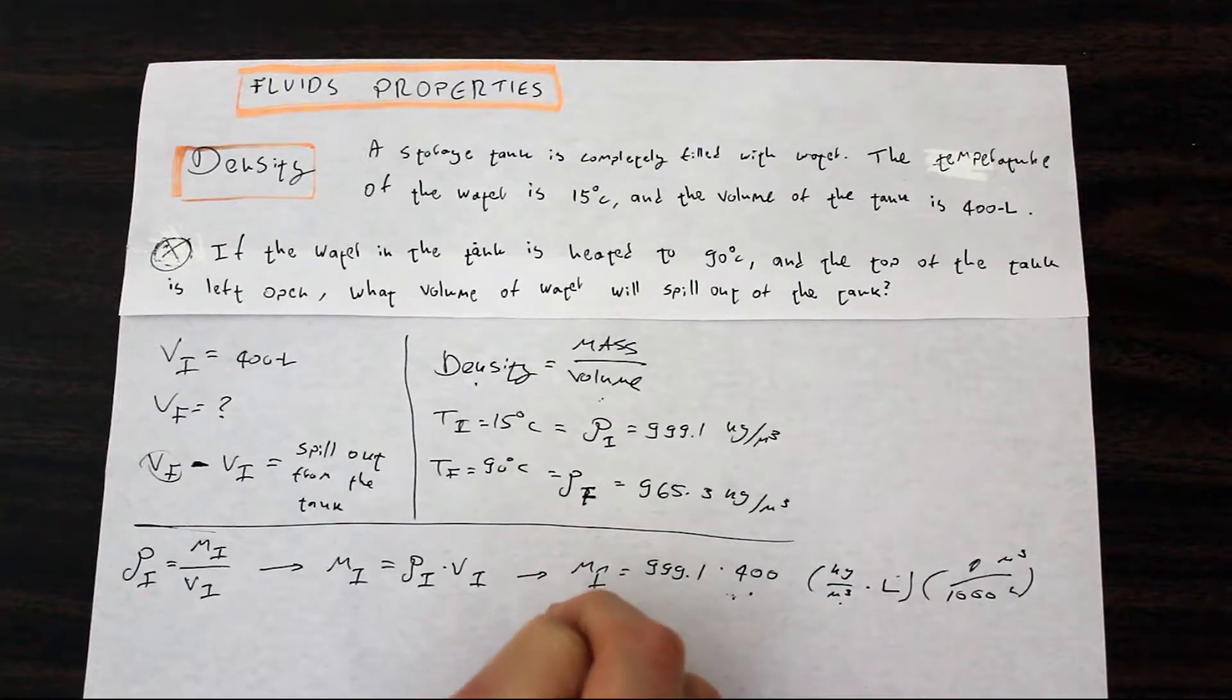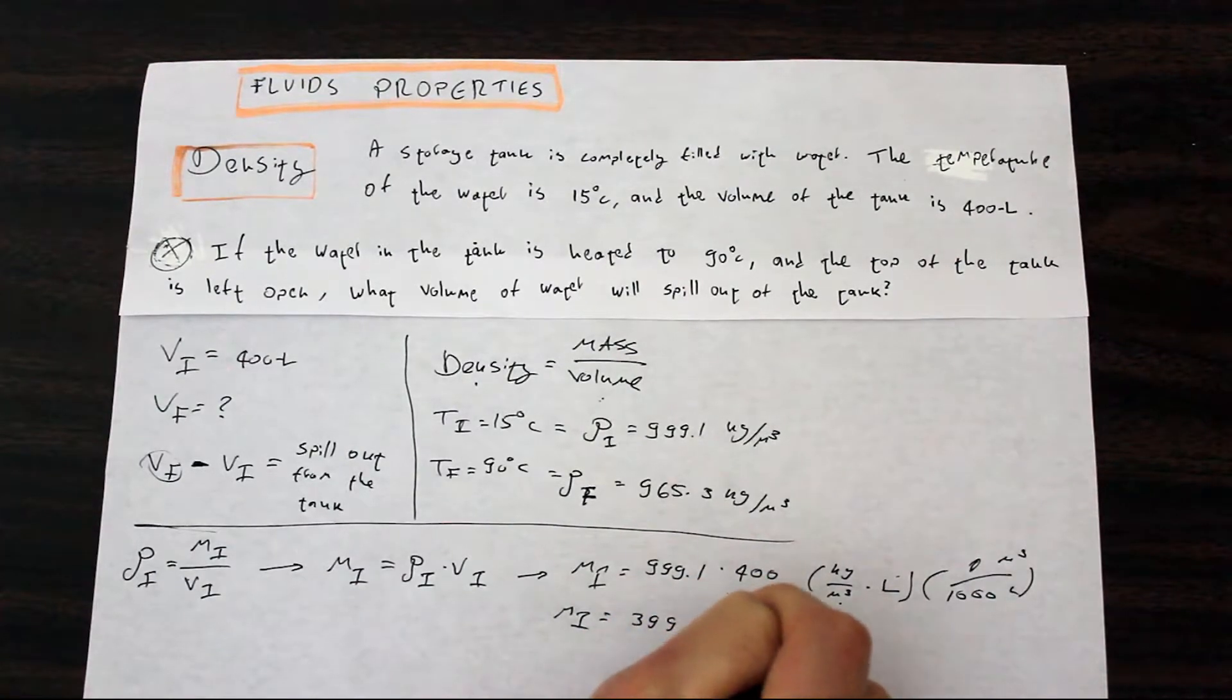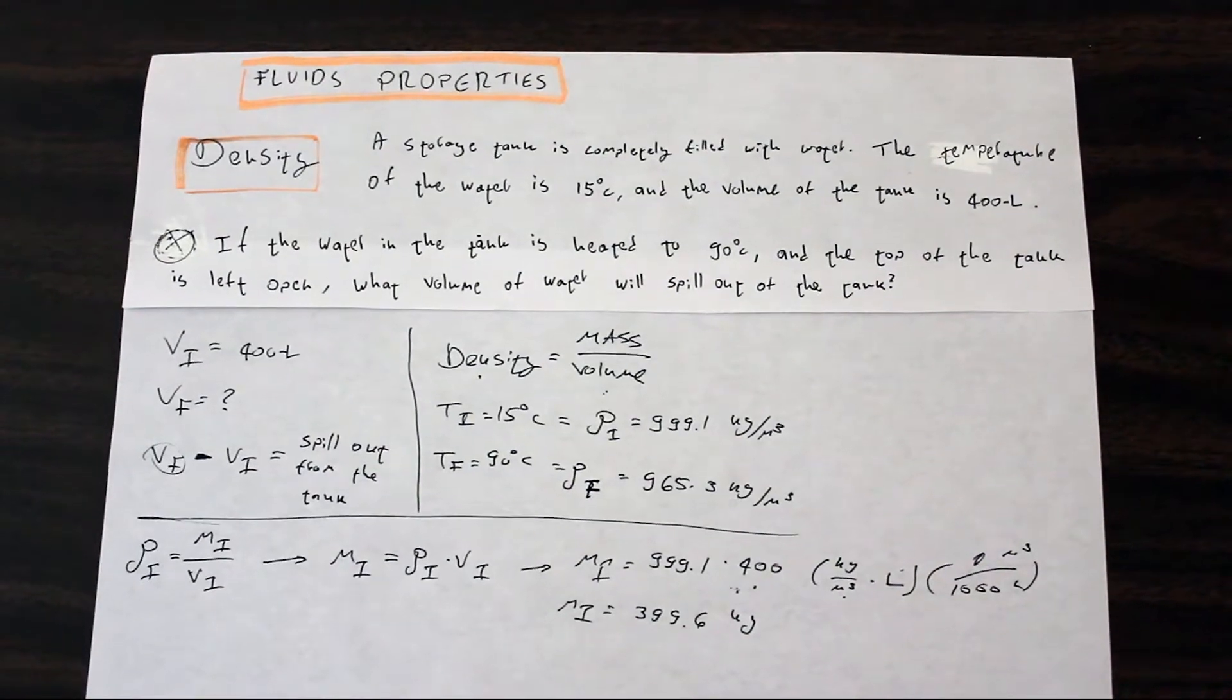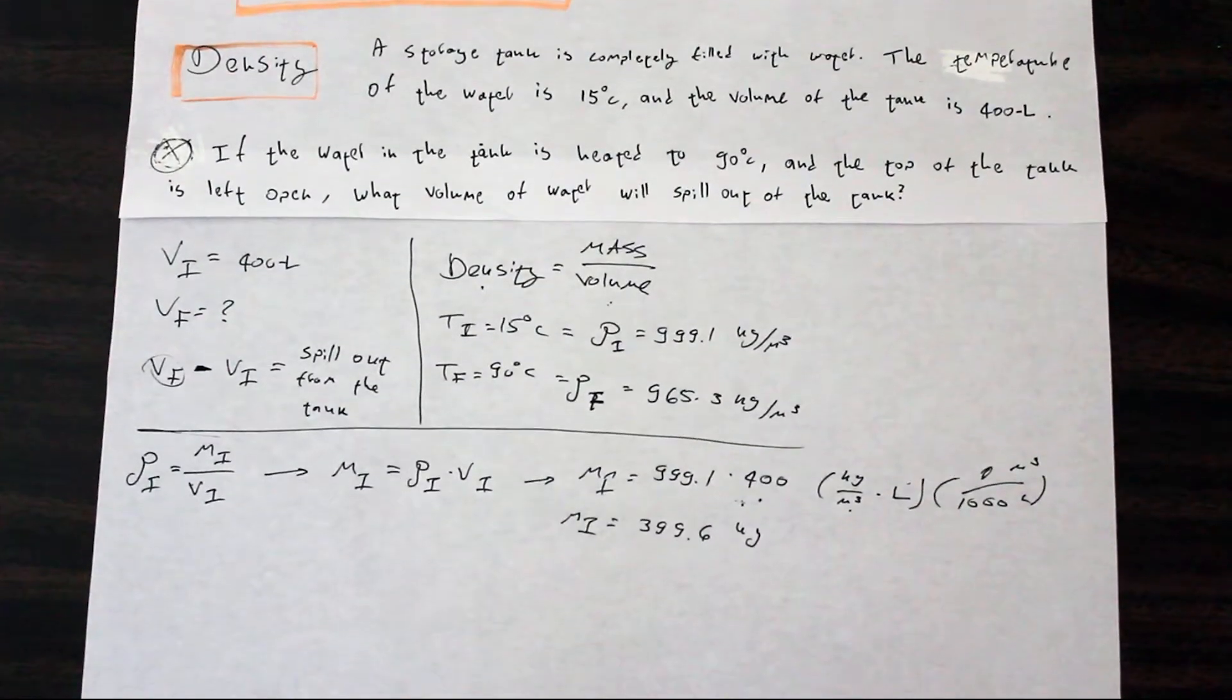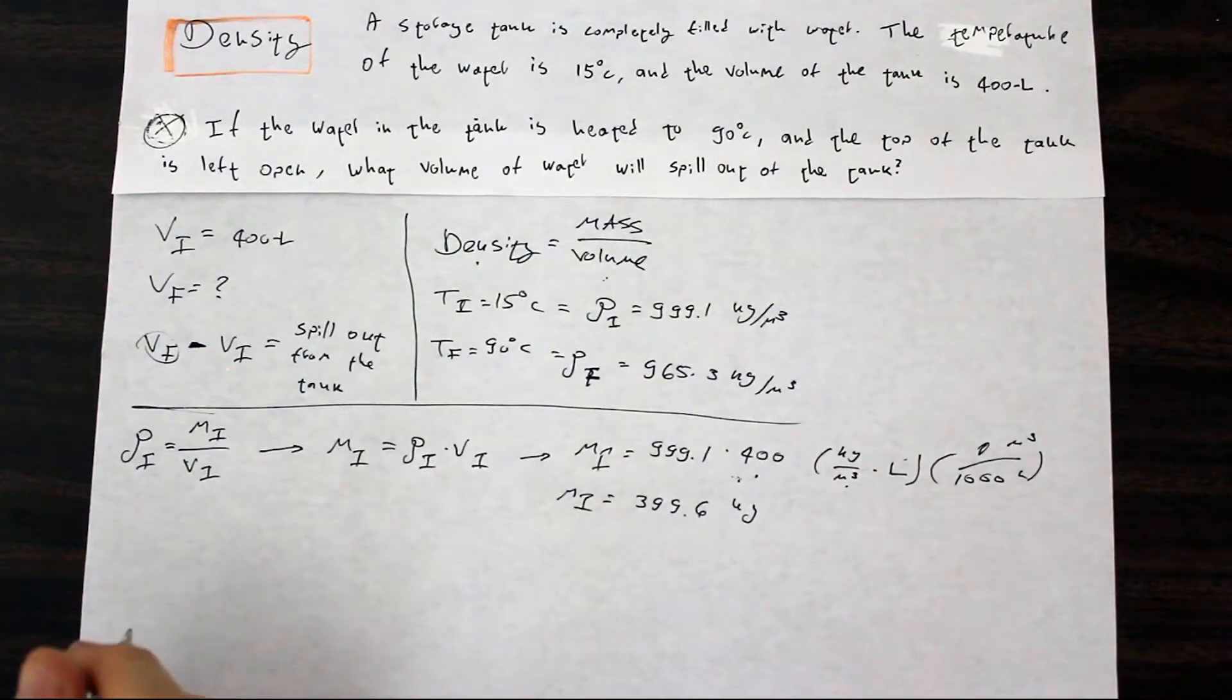And then we can say that our initial mass is 399.6 kilograms. And to notice your units is something that is always really, really helpful. It's usually the trick in these questions.